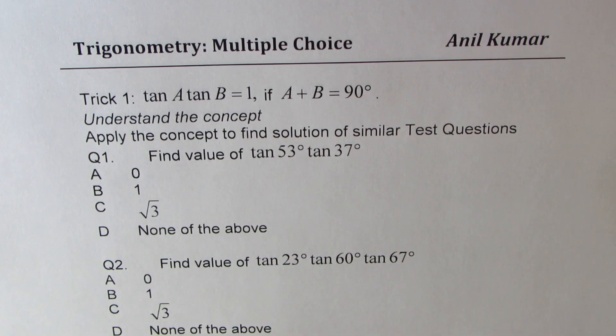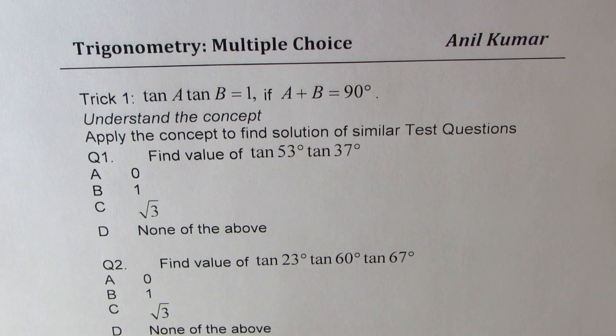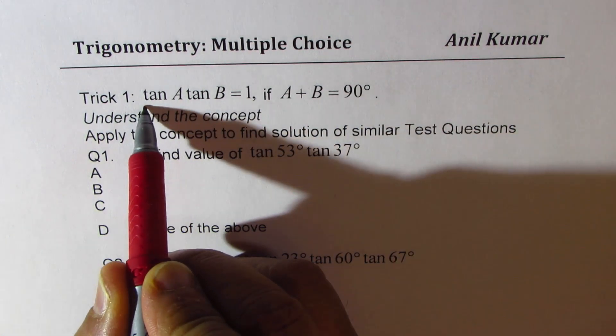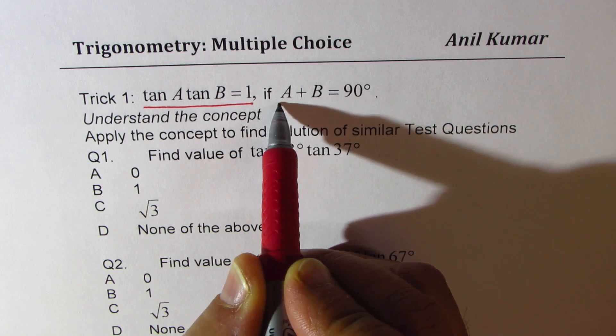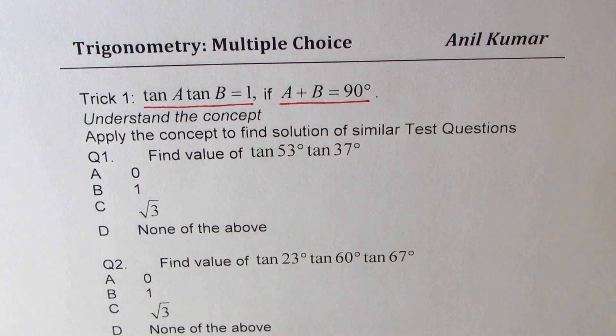I am Anil Kumar. Welcome to my series on tricks to solve multiple choice questions on trigonometry. I have numbered them 1 to 10. We will take these tricks one by one, understand the concept and apply it to multiple choice questions. Trick number 1 is that product of tan A and tan B is equal to 1 if and only if A plus B is 90 degrees.